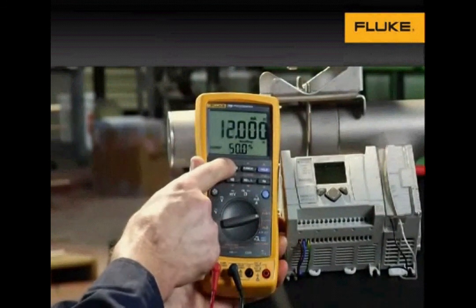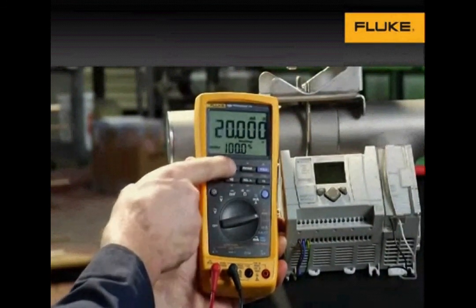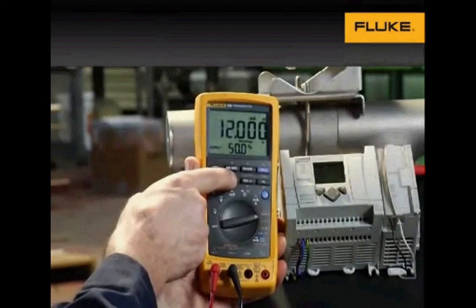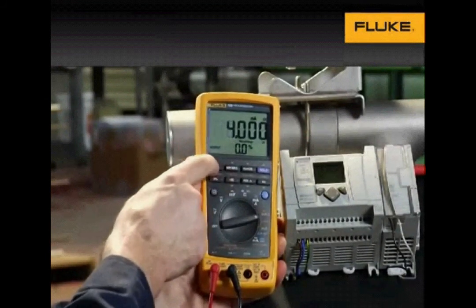In milliamp output mode, you can manually change the milliamp output to verify the device, such as an input/output to a PLC or a local indicator.